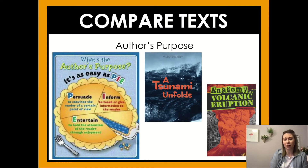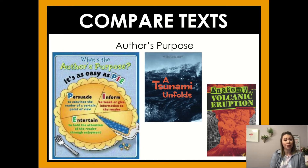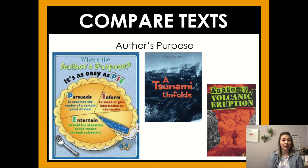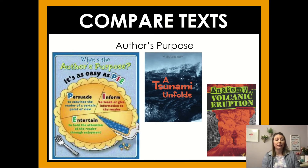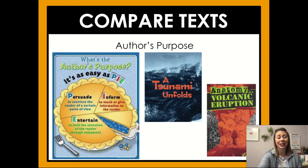We also want to think about the author's purpose — one of our success criteria. Remember it's as easy as PIE: Persuade, Inform, or Entertain. Thinking about A Tsunami Unfolds — it's giving you information about a specific event, so that is informational. And Anatomy of a Volcanic Eruption? It's inform as well. These are both informational texts trying to inform you about different things. A Tsunami Unfolds tells you about the tsunami in Japan, whereas Anatomy of a Volcanic Eruption gives you information about volcanoes. Both authors' purposes are to inform.